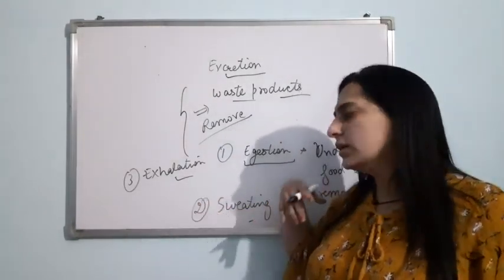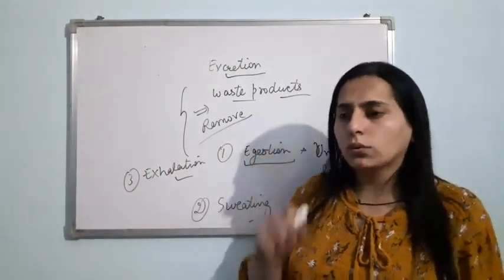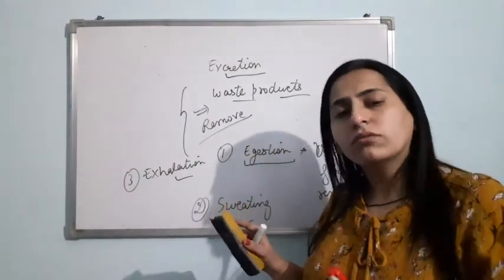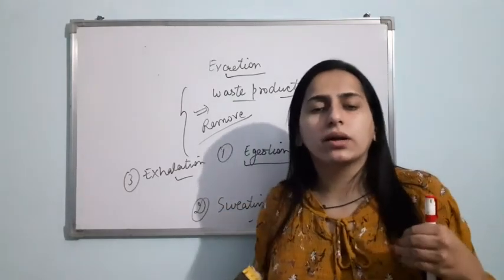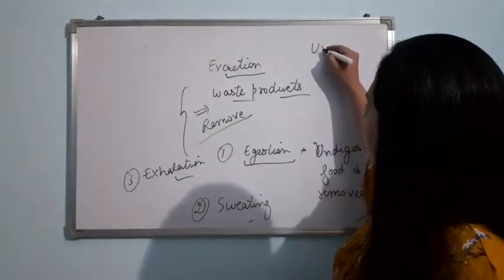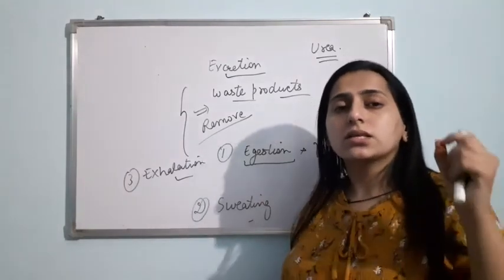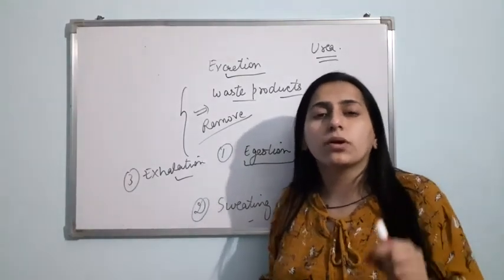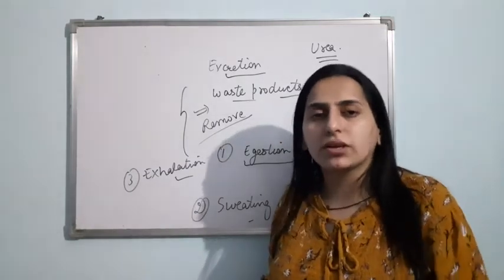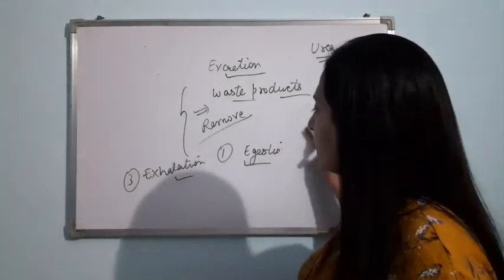Apart from these waste products, there is one more waste product produced by our body: nitrogenous waste — urea. Our body produces urea as well. This is a nitrogenous waste product, meaning a waste product that has nitrogen in its chemical structure. Now let us talk about how this urea is removed from the body.